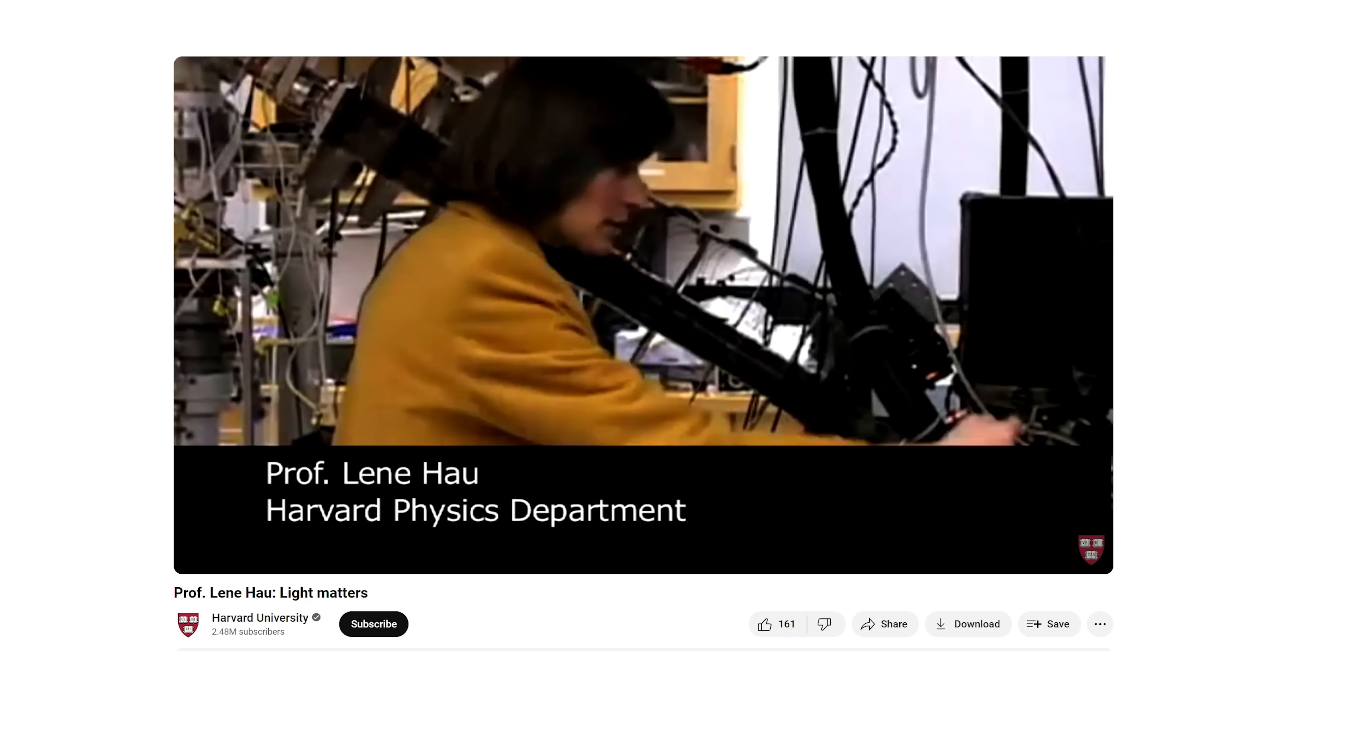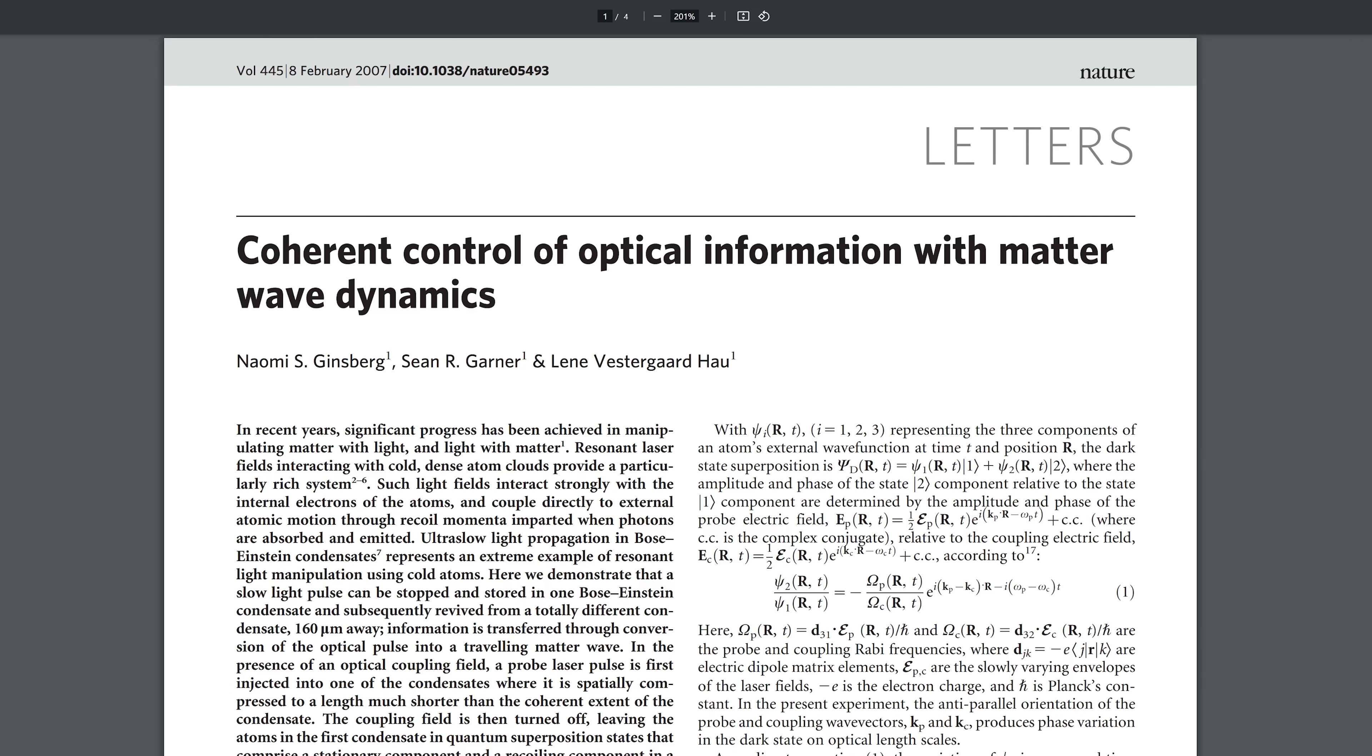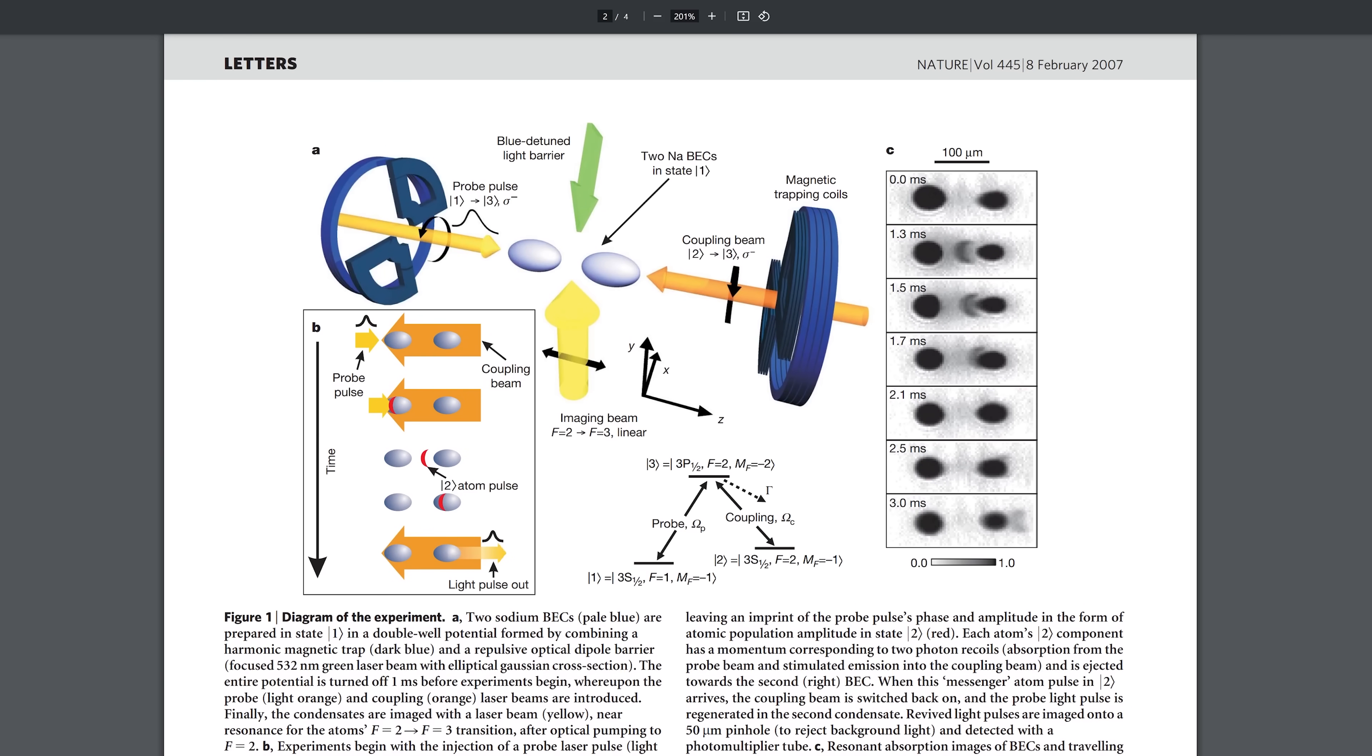In 2001, Professor Lean Howe from Harvard achieved something seemingly impossible. She and her team shined a light in a supercooled material. The light in that material slowed down from 300 million meters per second to just 17 meters per second. And eventually they were even able to stop the light completely and then start it up again. But what does this even mean? Does light actually slow down in different materials or is it just a trick?